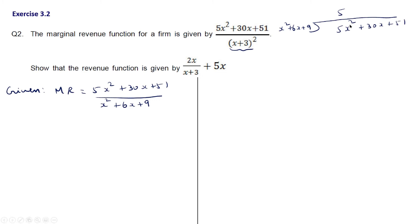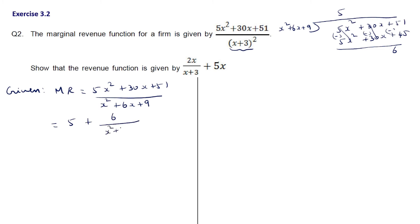Dividing 5x² + 30x + 51 by x² + 6x + 9: multiplying by 5 gives 5x² + 30x + 45. Subtracting leaves a remainder of 6. So MR = 5 + 6/(x+3)². This is the simplified marginal revenue function.